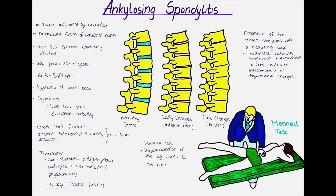Surgery is also an option for treating ankylosing spondylitis. This is however usually done in severe cases and includes options such as spinal fusion to prevent spinal deformities and improve the quality of life of the patient. In a spinal fusion, two or more bones of the vertebra are fused by the help of screws or cages to prevent their movement and deformation.